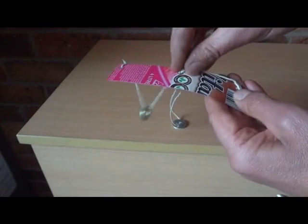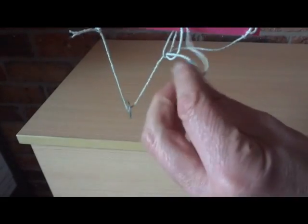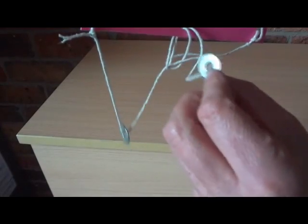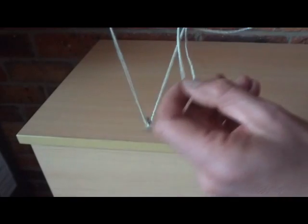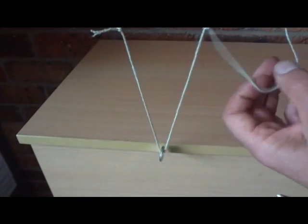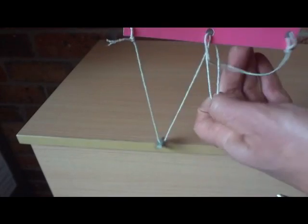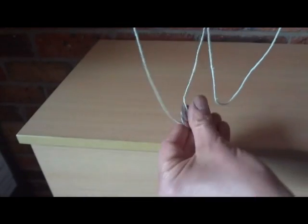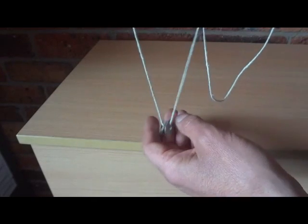Now we grab all the strings at the back, pull them back through, and once again we push that washer through the next little loop, drop it through, and there you have it. Both washers now are on the left-hand side of the trick.